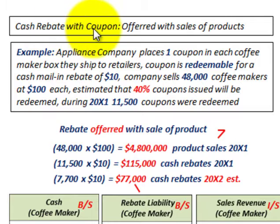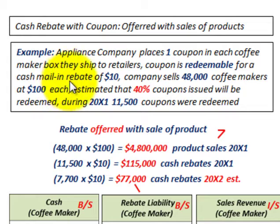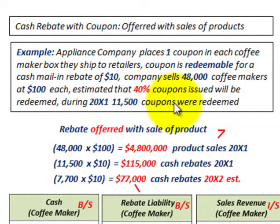We're going to be looking at cash rebates using coupons offered with the sale of a product to promote it, and we're going through a basic example. An appliance company places one coupon in each coffee maker box shipped to retailers. This coupon is redeemable for a $10 cash mail-in rebate. The company sells 48,000 coffee makers at $100 each to the retailers, and it's estimated that 40% of these coupons will be redeemed. During 20X1, 11,500 coupons were redeemed — sent back to the appliance company by customers.